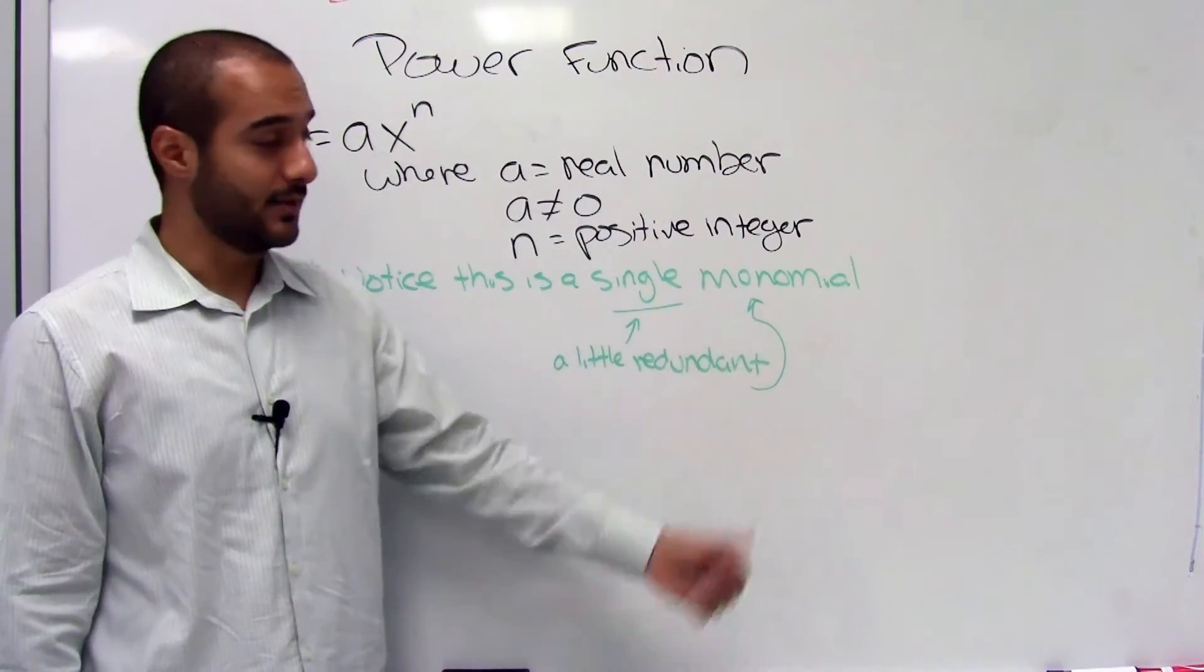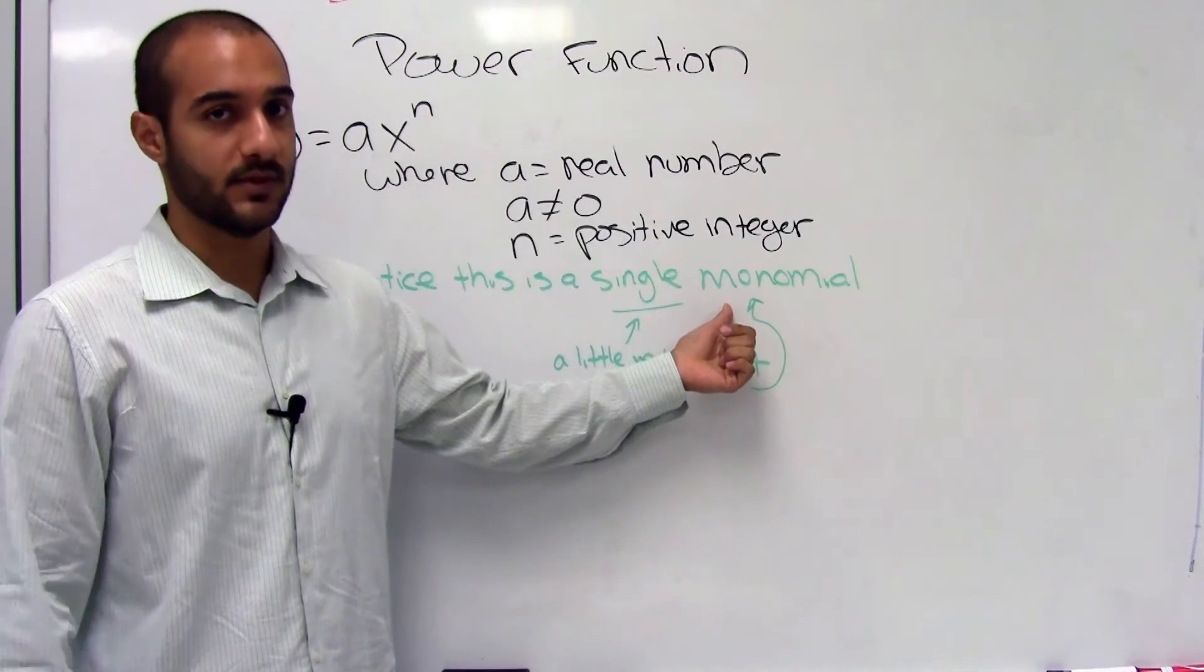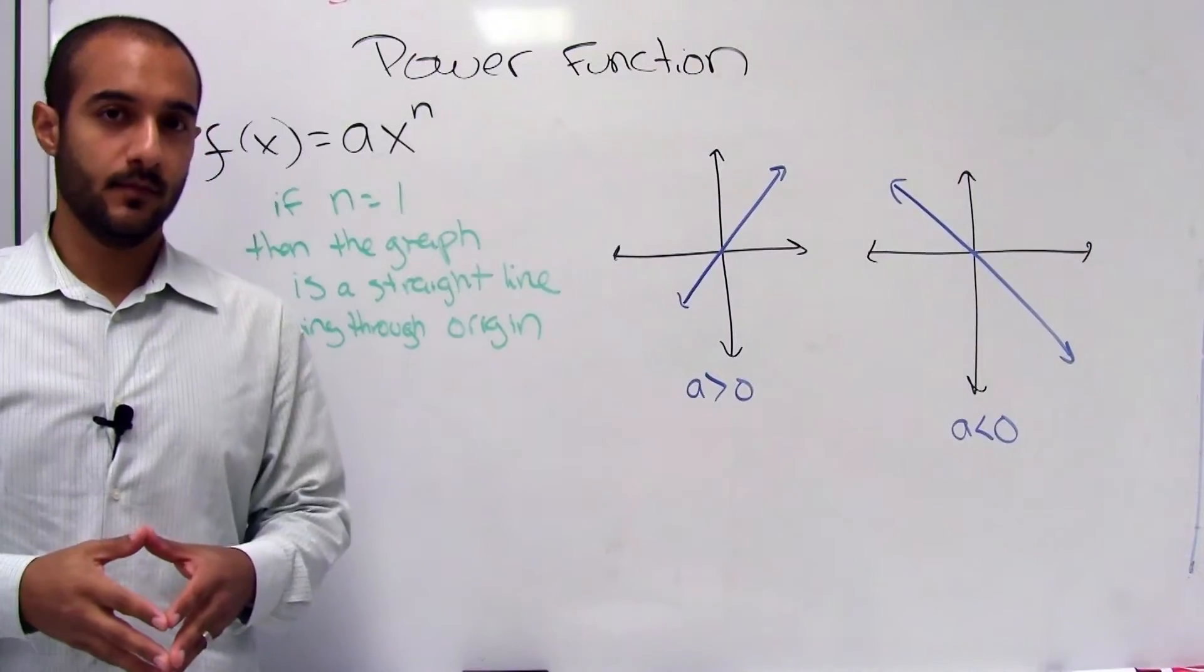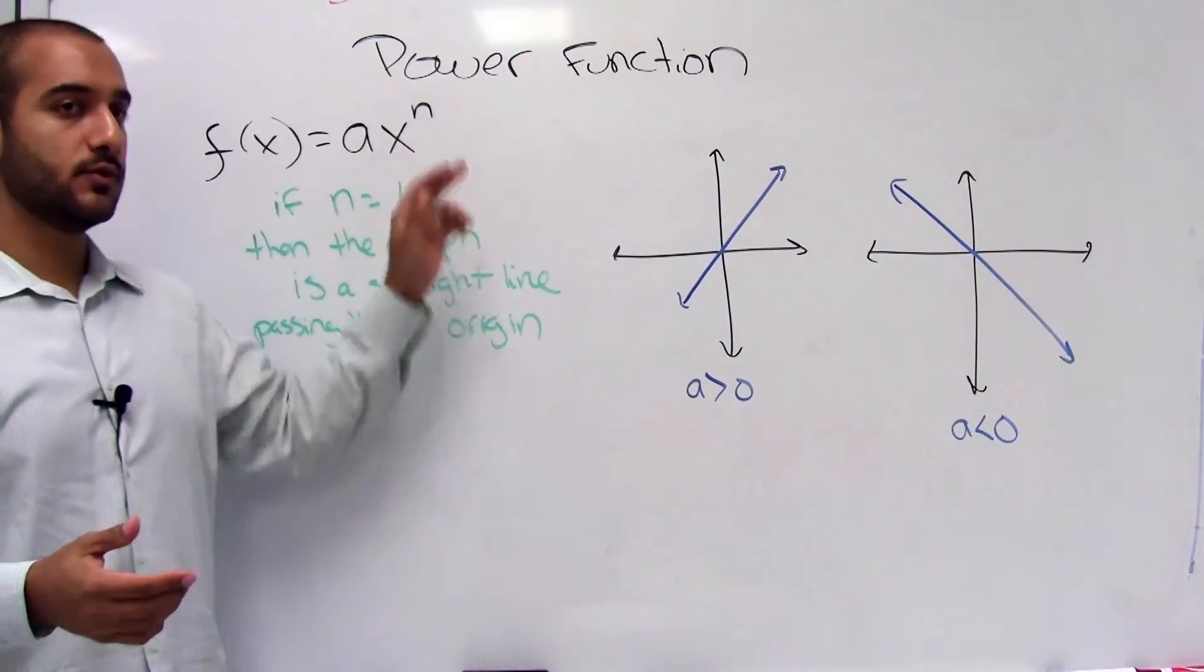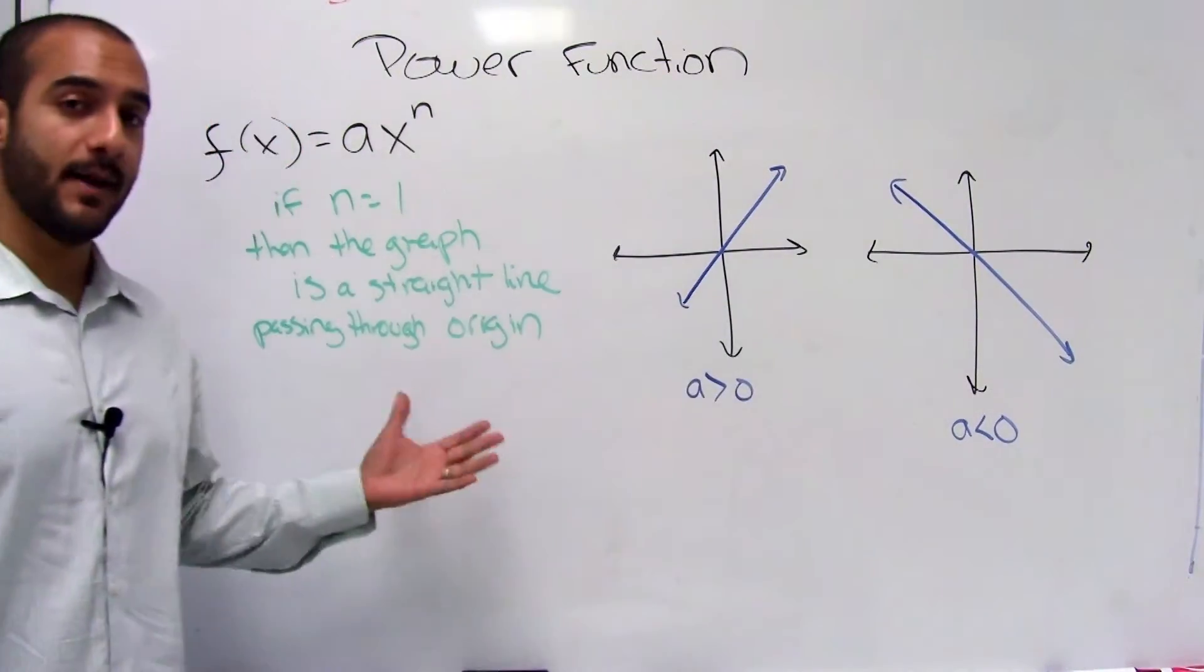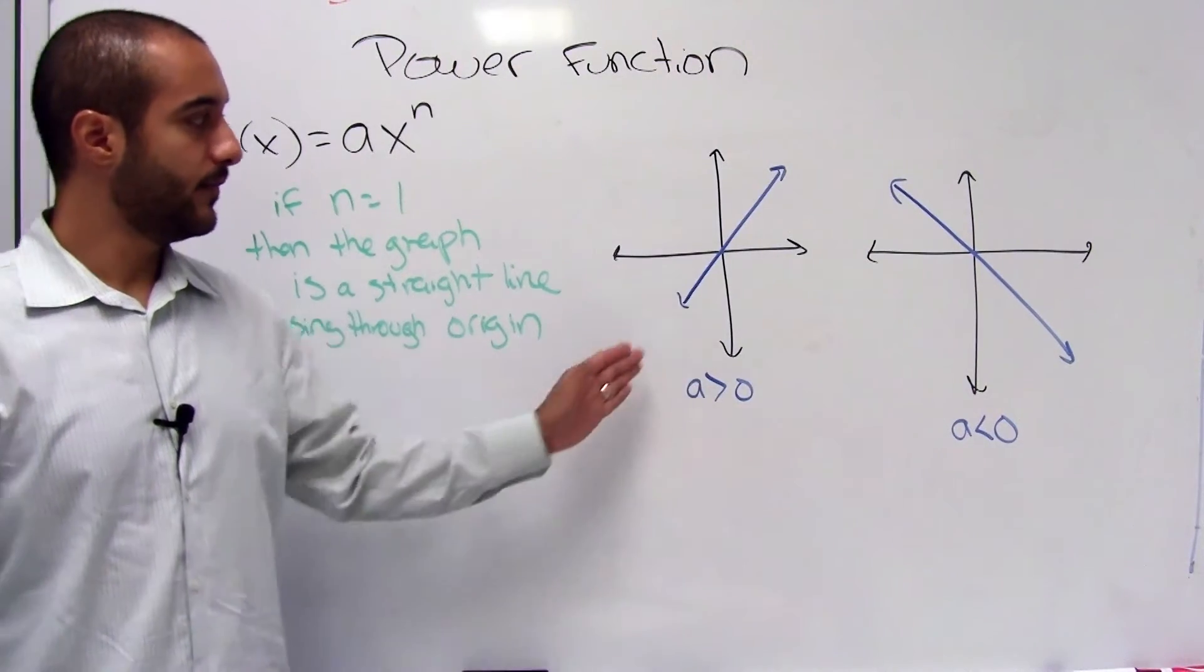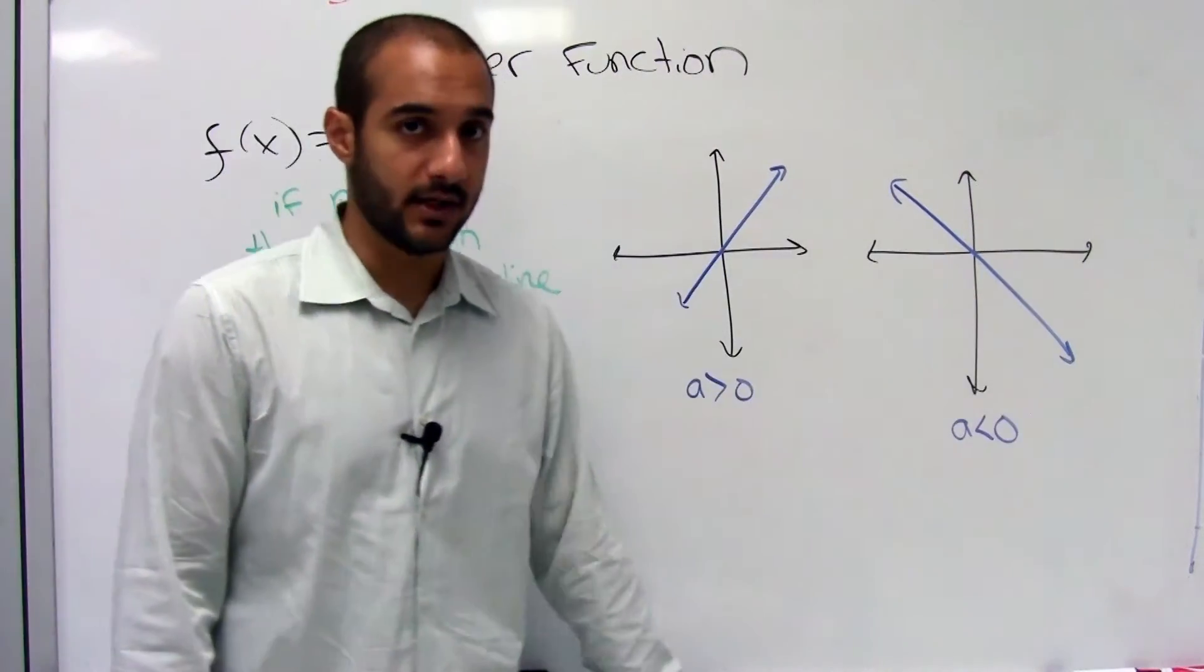And notice that this is actually kind of redundant, since single means one and so does the prefix mono. So let's take a look at a couple. Alright, so the simplest case to look at is here, where n is equal to one, so our degree for this power function is one. And the graph is going to be a straight line that passes through the origin, and if a is greater than zero, then you'll have a positive slope. If it's less than zero, then you have a negative slope.